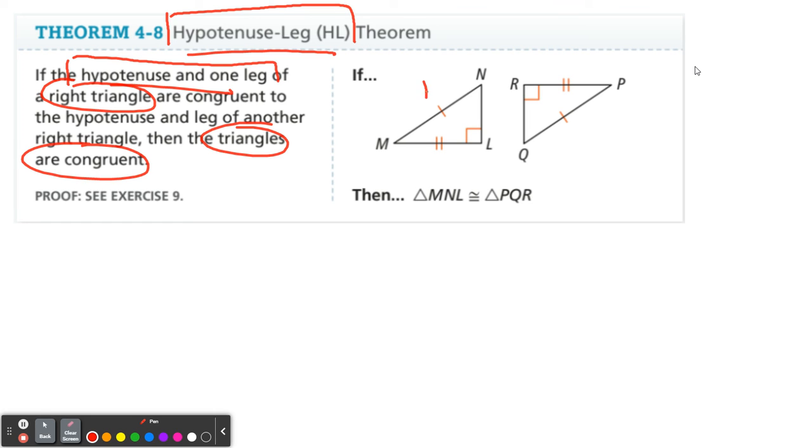So, in this picture here, MN and PQ are the hypotenuses. ML and PR are the legs. And here is your right angle. Right? So, you have a right triangle. You're done. HL.